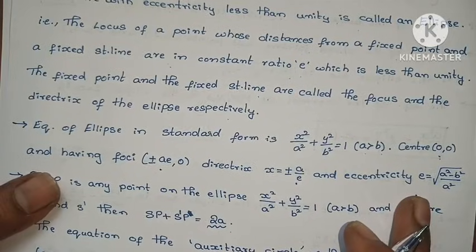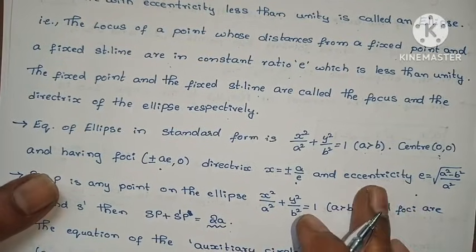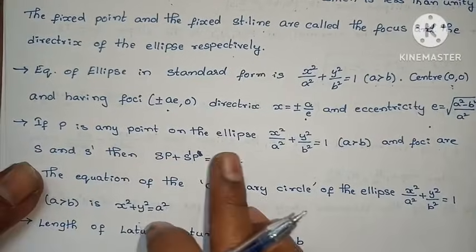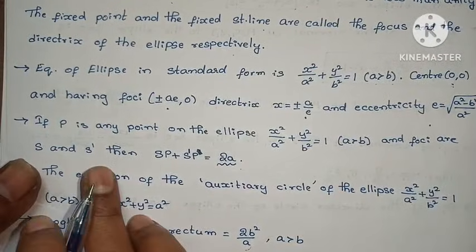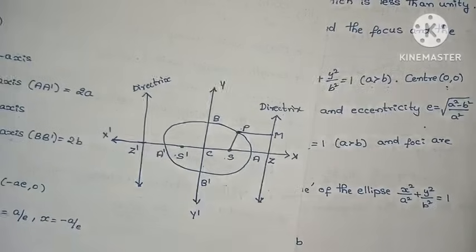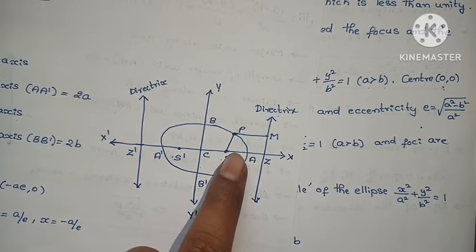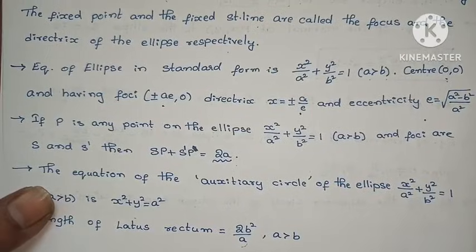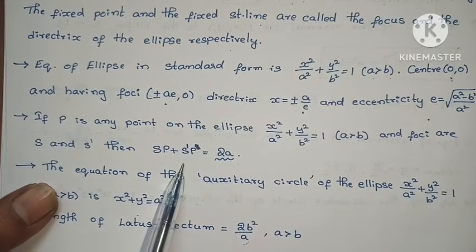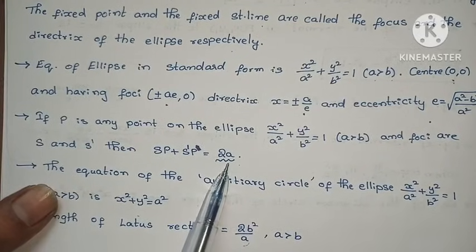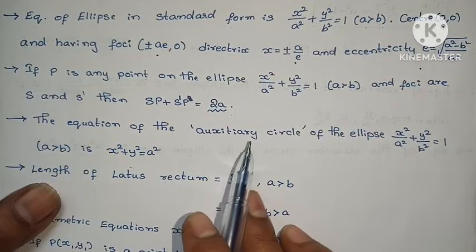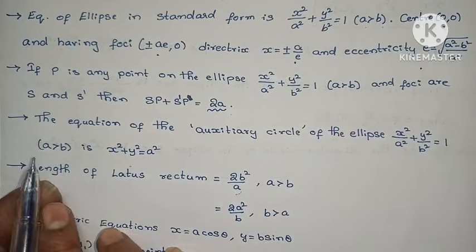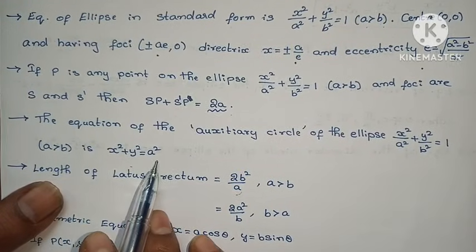Eccentricity e equals to root of (a² minus b²) by a². If point P is any point on the ellipse and foci are S and S', then SP plus S'P equals to 2a. The equation of the auxiliary circle of the ellipse x² by a² plus y² by b² equals to 1, where a greater than b, is x² plus y² equals to a².